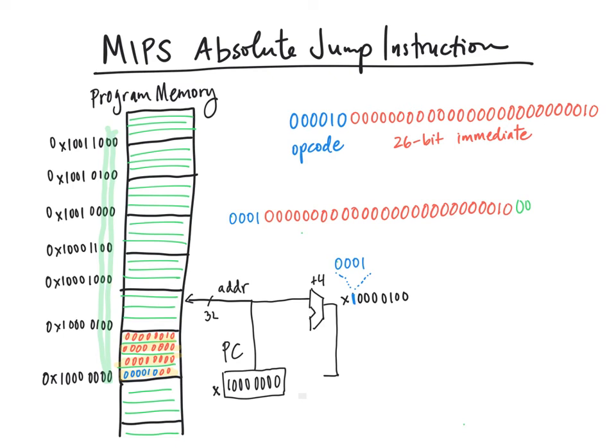And when we encounter an absolute jump instruction like this, then we're going to have to create another option for what the PC could be. And we're going to use a control signal here that will say, if this is an absolute jump,